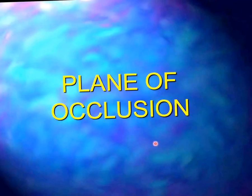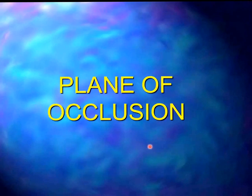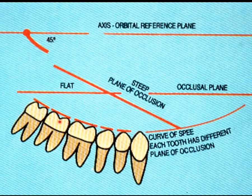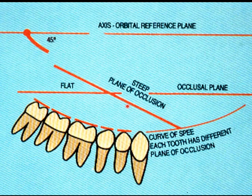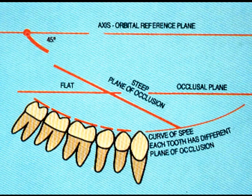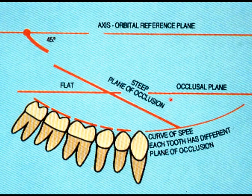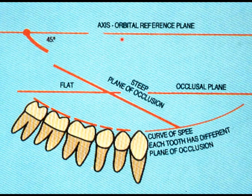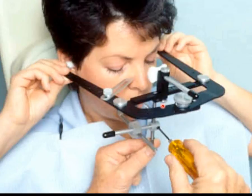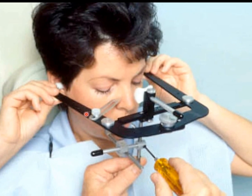The plane of occlusion — we have steep planes, flat planes, and even reverse situations. Remember the curve of Spee: each tooth has its own plane of occlusion, and we want to capture this so we can diagnose or change it if needed. This is usually related to a reference plane, which includes the axis and a third point of reference, usually orbitale. What's really important is where the protrusive pathway relates to the cuspal inclines. We capture this plane of occlusion using a face bow. The bite fork captures the occlusal plane, and the upper surface of the face bow is your plane of reference.